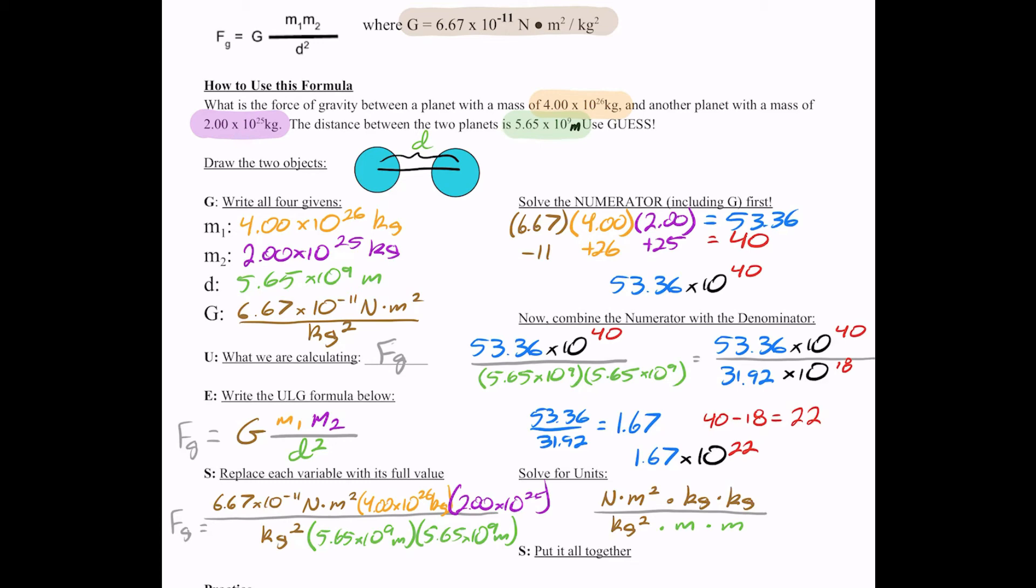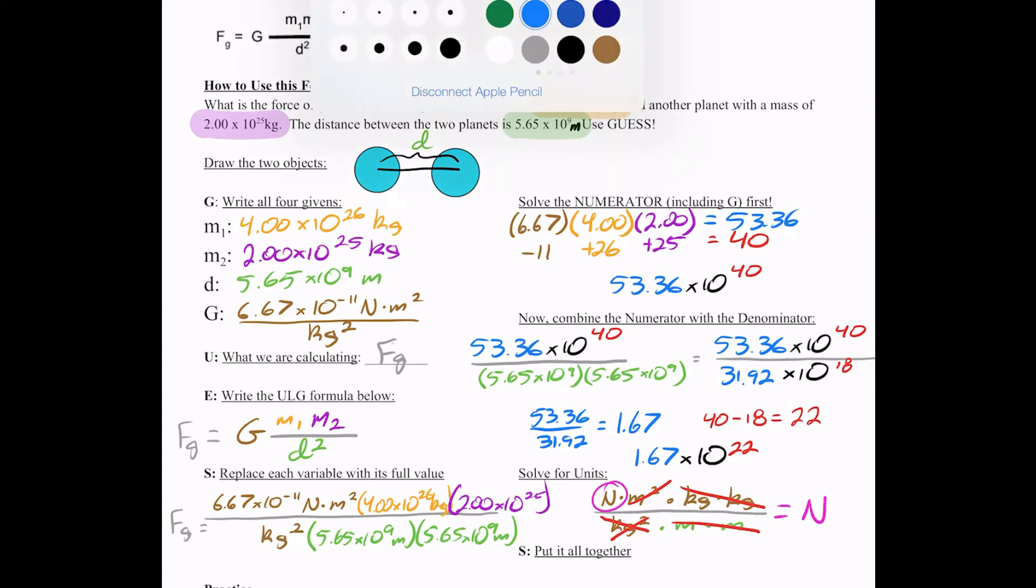I can do math on these units. What can I cancel out? I can cancel out these two kilograms with the kilograms squared. What else can I cancel? The meters. What am I left with? What am I solving for? Force of gravity, which is measured in newtons. So that is good. I ended up with the unit that I was supposed to.